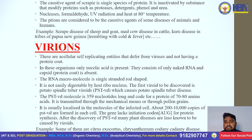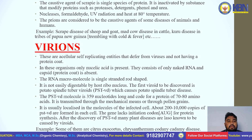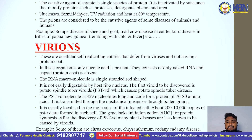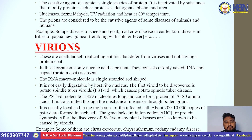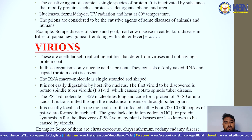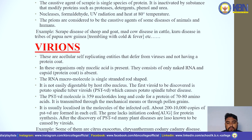Prions are considered the causative agent of some diseases in animals and humans — for example, scrapie disease of sheep and goat, mad cow disease in cattle, and kuru disease in tribes of Papua New Guinea. Next are viroids — acellular self-replicating entities that differ from viruses in not having a protein coat. Only nucleic acid is present; they consist of only naked RNA, and the capsid is absent.